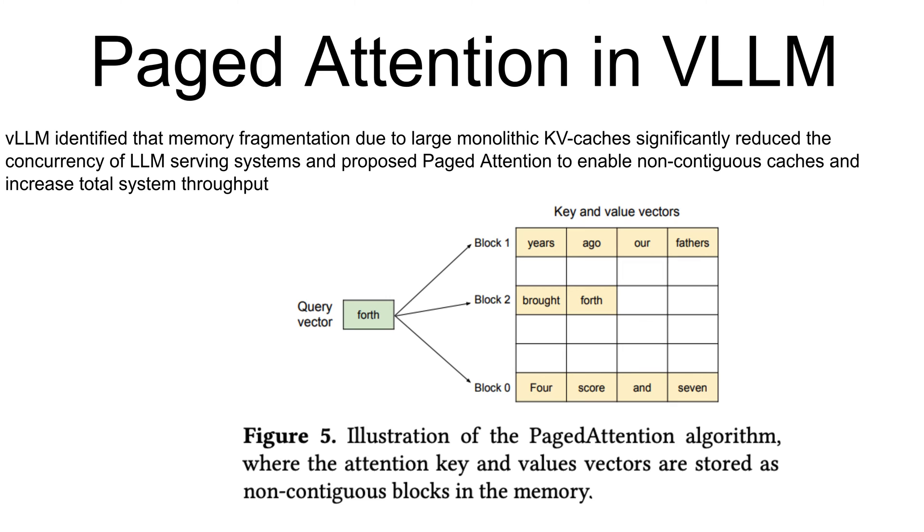vLLM identified that memory fragmentation due to KV cache can take a lot of memory which goes unused. If you look at this example, the key and value vectors are spread across three blocks, and the three blocks are not contiguous in physical memory. At each time, the kernel is multiplying the query vector qi of the query token and the key vector kg in a block to compute the attention score and later multiplying it with the value. In summary, the attention algorithm allows the KV blocks to be stored in non-contiguous physical memory, which enables more flexible page memory management in vLLM.